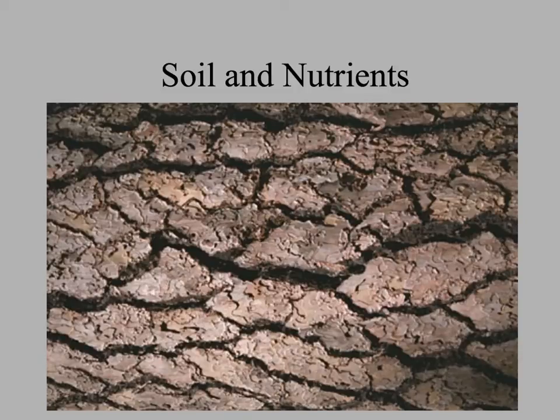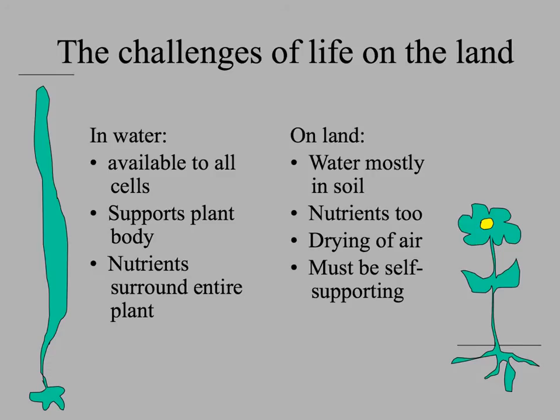Living on Earth isn't quite as easy as living in water was for plants. When a plant is in water, everything is surrounded by water, so there's no shortage of water to the cells. The water provides buoyant force to hold up the plant body, so not much structural support is needed. And in the water, nutrients are dissolved, also surrounding the entire plant.